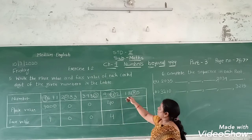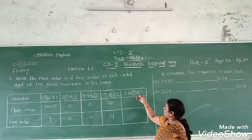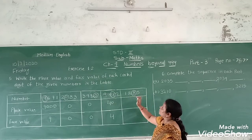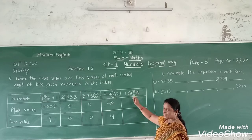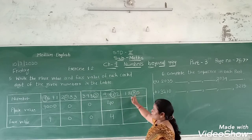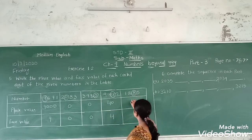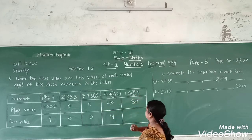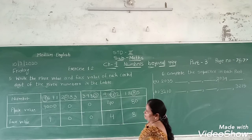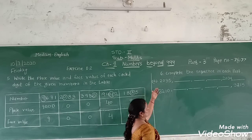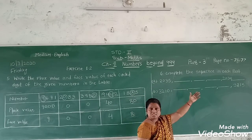Next number: one thousand, eight hundred, eighty-five. The circled digit is eight. The place value is eighty, and the face value is eight. Now question six: complete the sequence in each part.